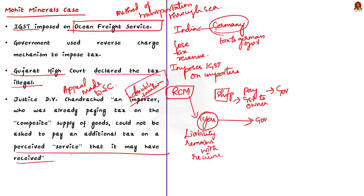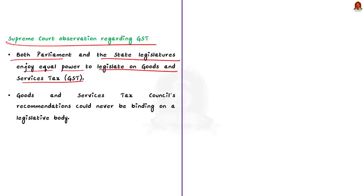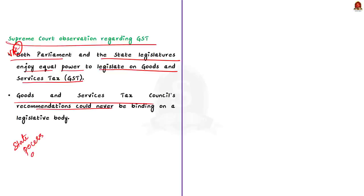Justice D.Y. Chandrachud, as part of the Supreme Court judgment, mentioned that the tax levied on imports is basically double taxation. He said an importer who was already paying tax on the composite supply of goods could not be asked to pay an additional tax on a perceived service that it may have received. Importantly, the Supreme Court also made observations regarding the GST: the court held that both Parliament and state legislatures enjoy equal power to legislate on GST, and that the GST Council's recommendations were just that — recommendations that could never be binding on a legislative body.